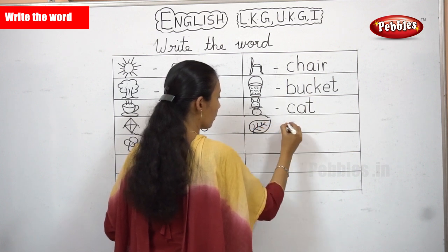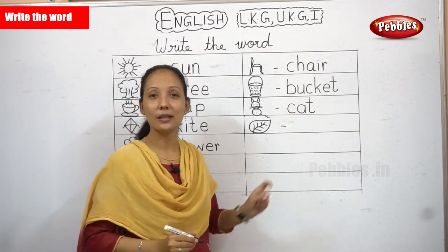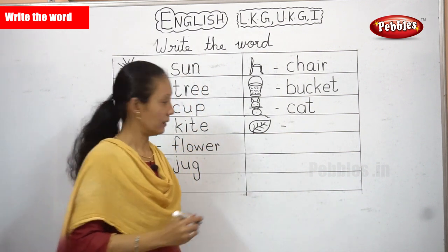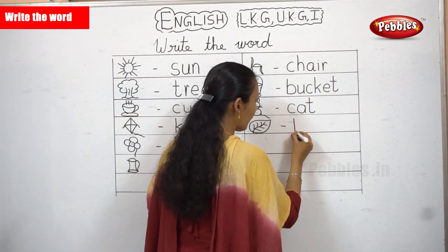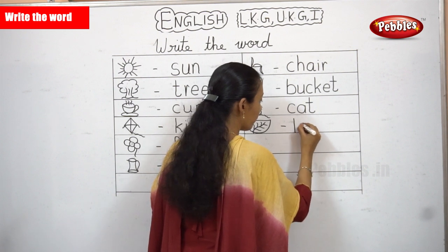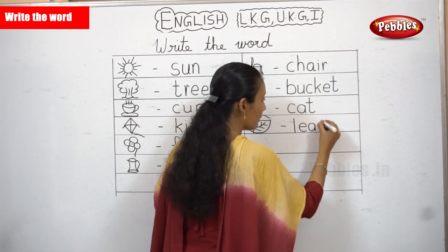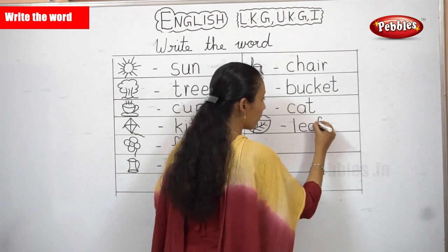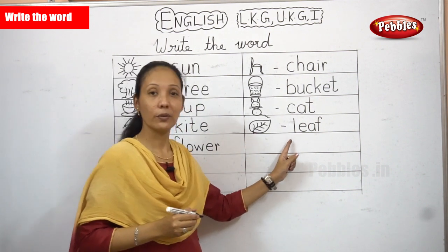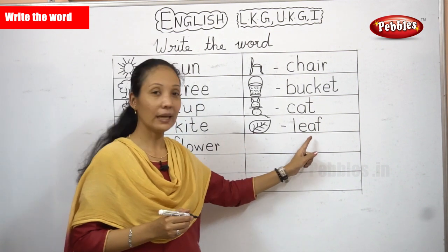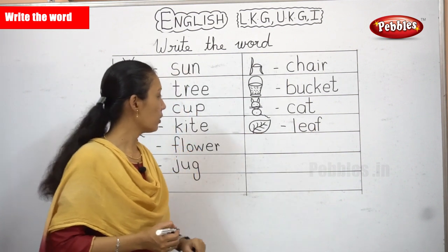What picture is this? It's a leaf. Shall we write the spelling for leaf? L-E-A-F. Leaf. Once again: L-E-A-F. Leaf. Your next one.